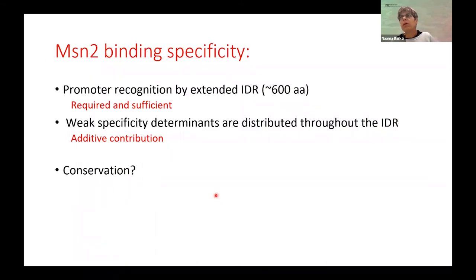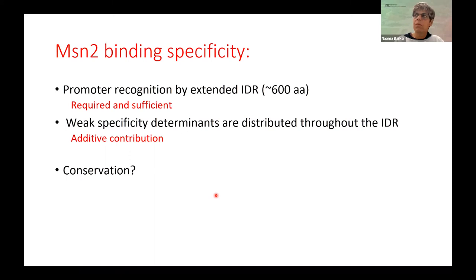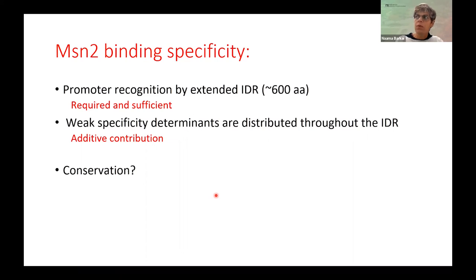From the MSN2 data, we conclude that binding specificity must distinguish between the motif sequence — defined by the DNA binding domain — and the promoter selection signal. The recognition of which promoters to visit comes from the non-DBD, specifically from this long intrinsically disordered region (IDR) of about 600 amino acids. This IDR is both required and sufficient for binding a large portion of the target promoters, and it does so not through any localized region, but through a multiplicity of weak specificity determinants distributed throughout the IDR.